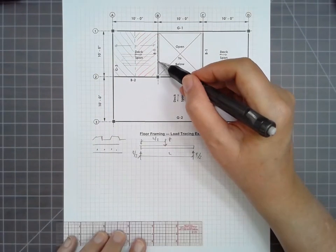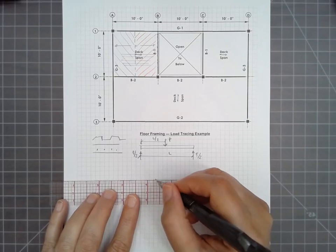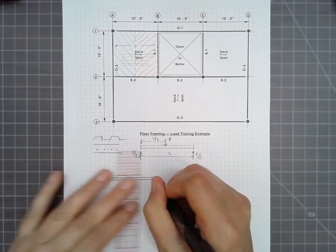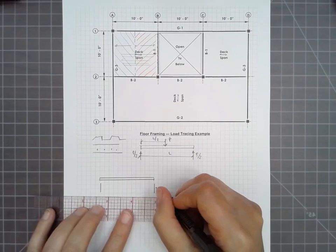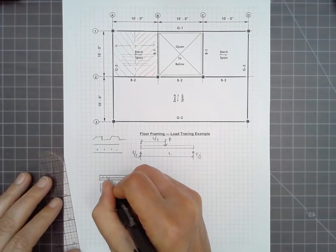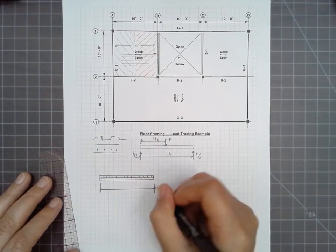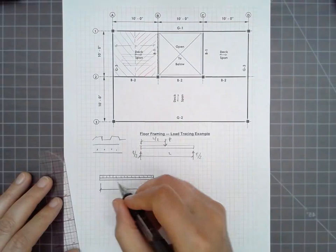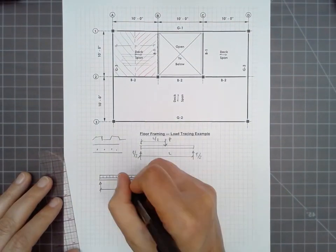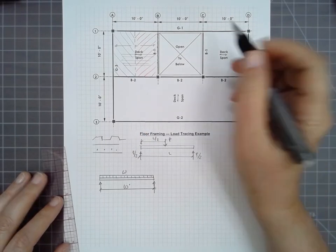So if we were to diagram B1, and we should do this without any calculations at first, just to understand how the loads are transferred. B1 is going to look something like this. So its span is 10 feet and it has a support on the left and the right, and it has a load W, depending on what the magnitude of this is.